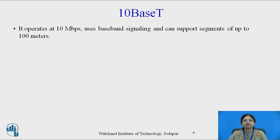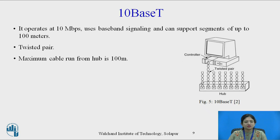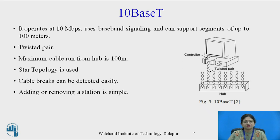The third type of cabling is 10BaseT. It operates at 10 Mbps, uses baseband signaling, and can support segments of up to 100 meters from the hub. It uses twisted pair cable. This diagram shows how a hub connects each terminal, with many twisted pair cables coming from the hub to the terminals. 10BaseT uses star topology, and cable breaks can be detected easily because each individual twisted pair is connected to an individual terminal, making adding or removing stations very simple.